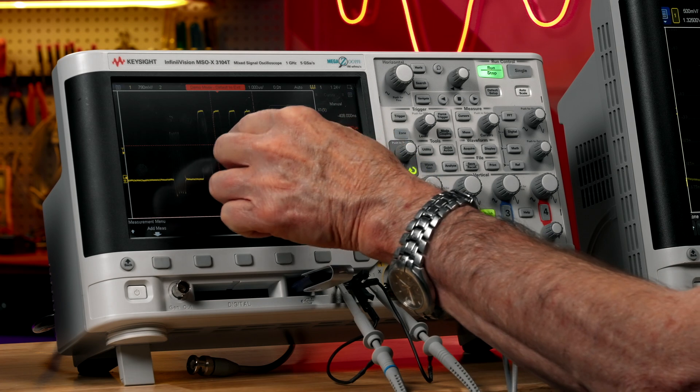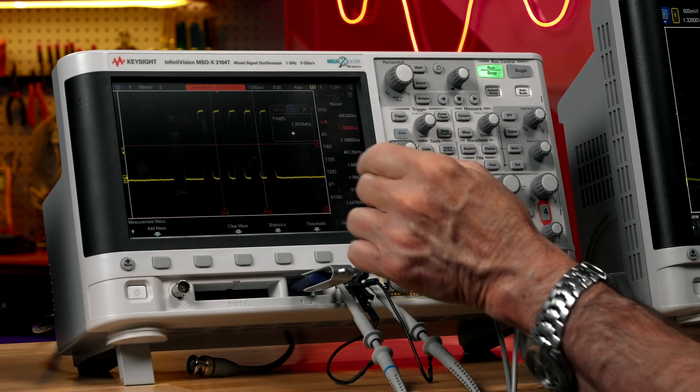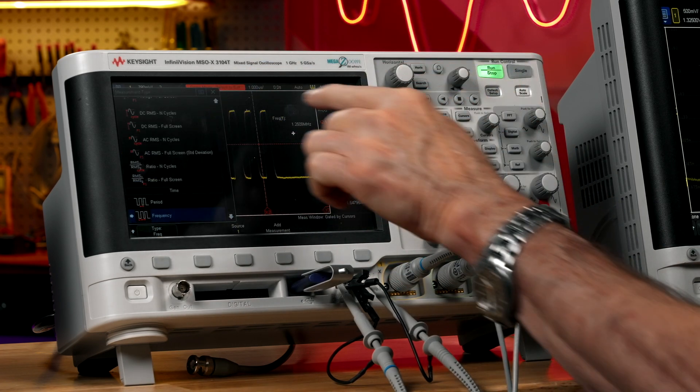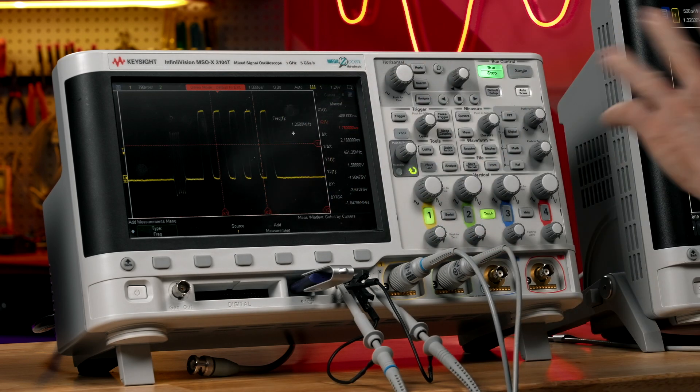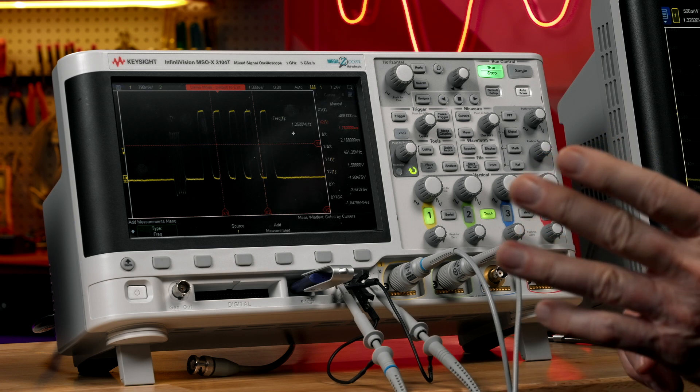This digital burst, it's measuring just between the cursors, measuring a frequency of 1.25 megahertz, a lot faster than what the counter measured, which was incorrect.